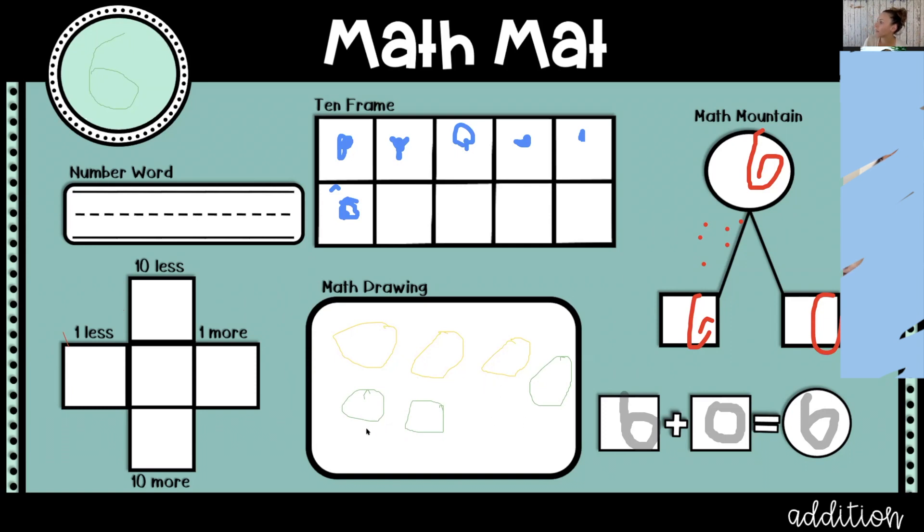Does anyone else see it represented a different way? Raise your hand. Hunter, how is it represented? Go ahead and unmute yourself. Okay, four at the top. How many do you have at the bottom? Two. Good. Four plus two equals six. Excellent. So I see two different equations there. Awesome job, Ivy.